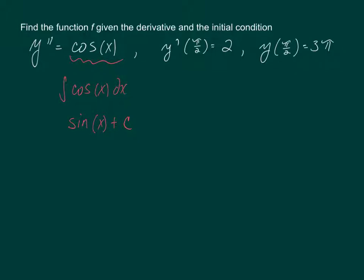And since when you're finding an antiderivative you're going backward one step, this means that what we just found right here will go backward one step from a second derivative, so that means we will have found the first derivative. So y prime equals sine of x plus C.